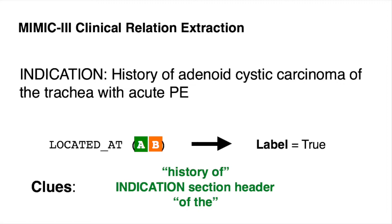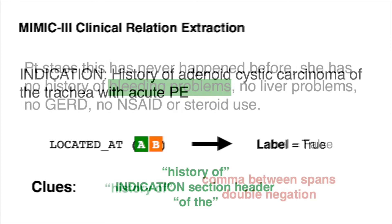So in this sentence, you have 'history of adenoid cystic carcinoma of the trachea.' You want to say, is this disease or disorder located at this anatomical location? And in fact, you label true. What clues might you leverage? Well, 'history of' is a pretty strong clue you're talking about some sort of disease. You're in the indication header, which usually tells you why you've gone to the hospital. You can see there's some sort of prepositional pattern occurring between these. These are all clues telling you strongly that this is truly connected.